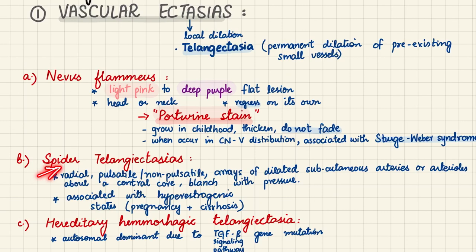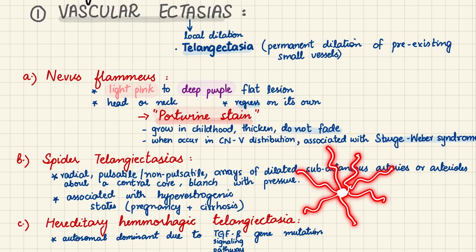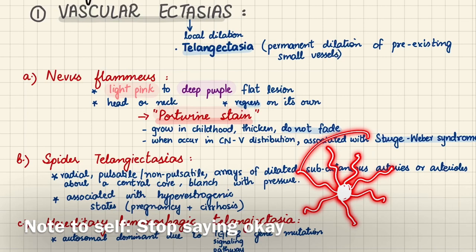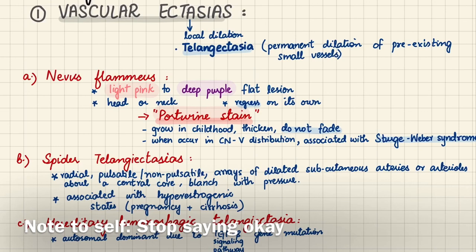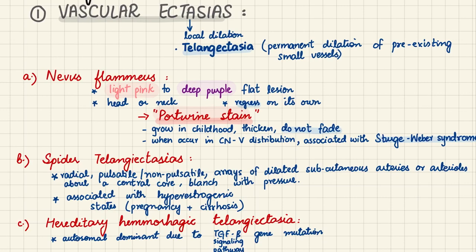Spider telangiectasias have a central core with radial dilated arterioles or veins. The central core will blanch with pressure. One important point is that they are associated with hyperestrogenic states — estrogen can directly promote angiogenesis by endothelial cell proliferation. Spider telangiectasias are therefore associated with hyperestrogenic states such as pregnancy and cirrhosis, which is also found to have high estrogen even in males.